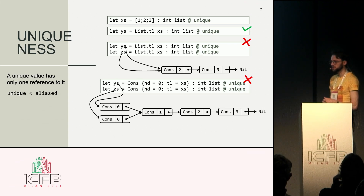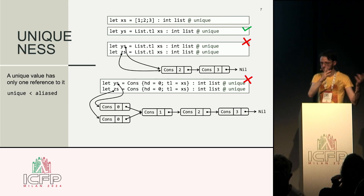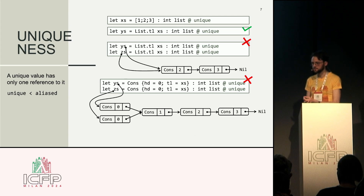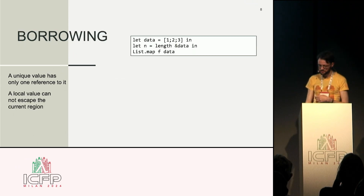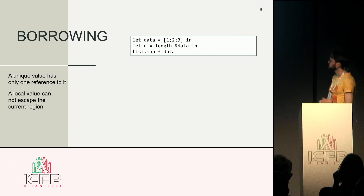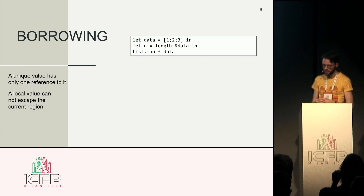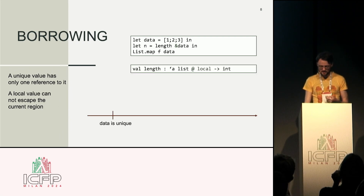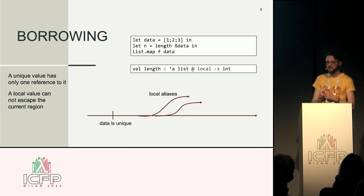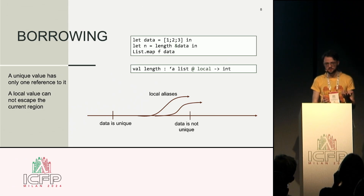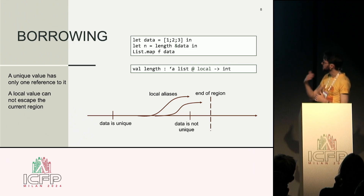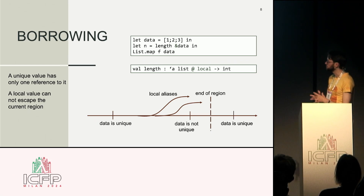This allows us to do the override safely: if I have the only reference to something, no other thread or location in the code can observe me mutating it. And actually, uniqueness mode works really well with the local mode because it gives us a notion of borrowing. Say I have some data [1, 2, 3] and before I map over it I want to apply the length function. I can do this because the length function promises to take its argument local — meaning the list cannot escape. I've created aliases, so it's no longer unique, but at a certain point those local aliases must stop, and I get a unique thing back. This gives you borrowing using just these two modes.